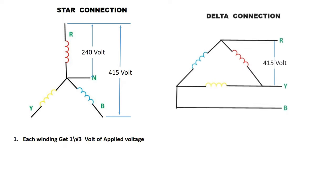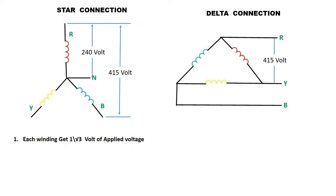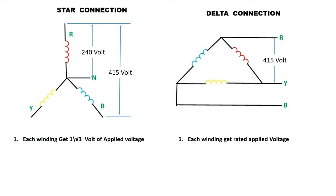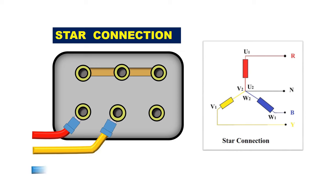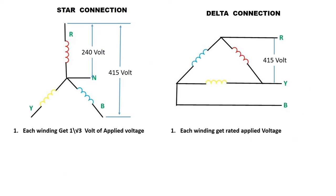If you connected this motor winding in delta, then motor winding will receive full voltage. It means even a single winding will get 415 volt. So, on connecting motor winding in star, motor winding will get less voltage. If we provide less voltage, then when we give power supply to start the motor, starting current will be only 3 to 4 times of rated current.